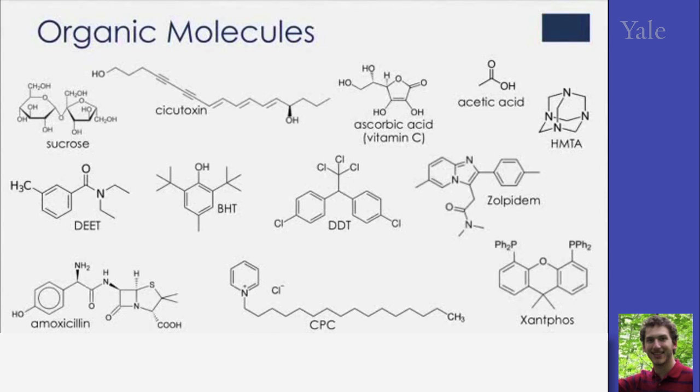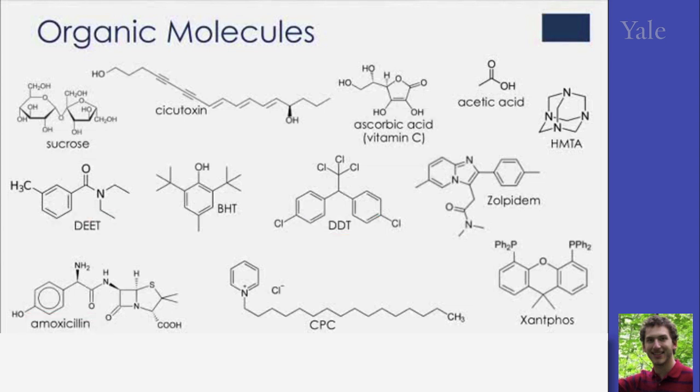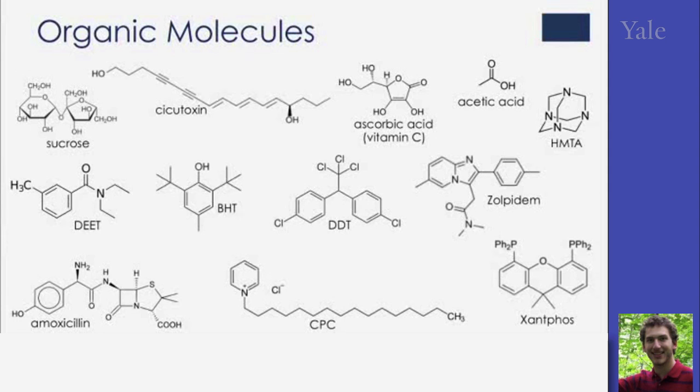Common names and abbreviations, as shown for the structures here, are often the fastest way to talk about complex organic molecules. But the names themselves contain limited or no structural information about the molecules themselves. There are two other languages that people use to communicate about organic molecules. There are systematic names and symbolic structures. Actually, the structures shown on this slide are the symbolic structures that I'm talking about.